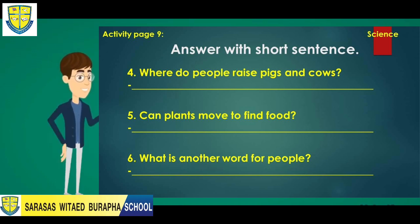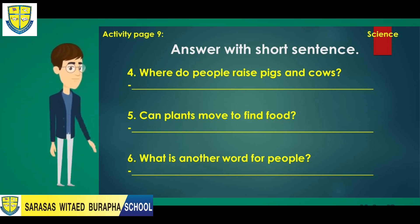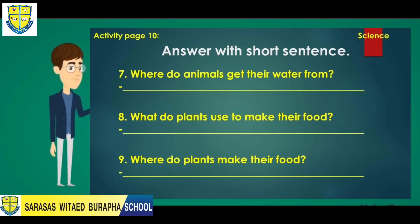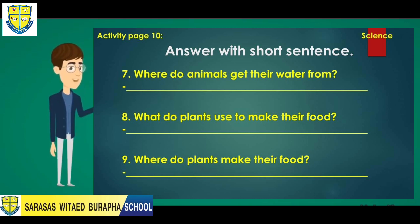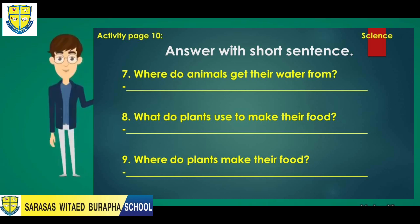These are still on page 9. Number 4: Where do people raise pigs and cows? Number 5: Can plants move to find food? Number 6: What is another word for people? Next are number 7, 8, and 9 — these questions are on page 10. Number 7: Where do animals get their water from?